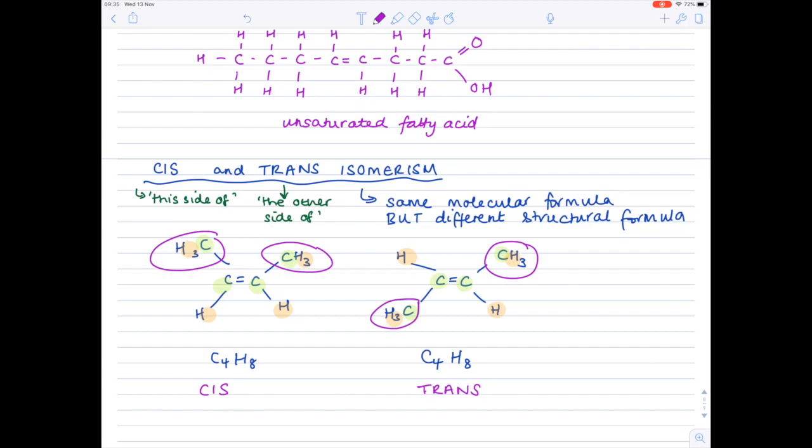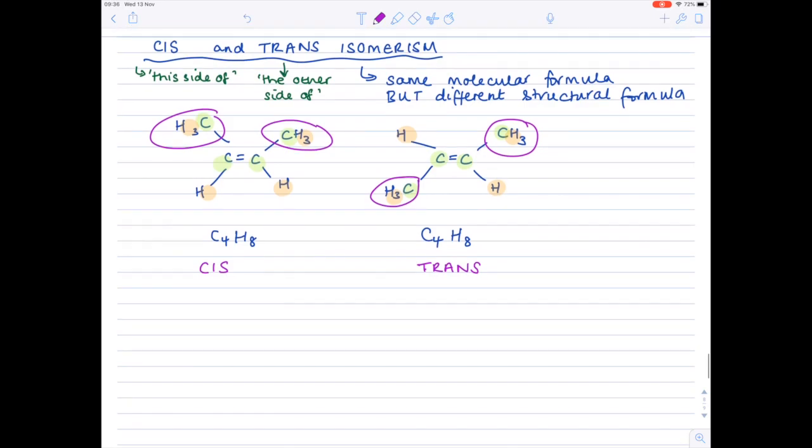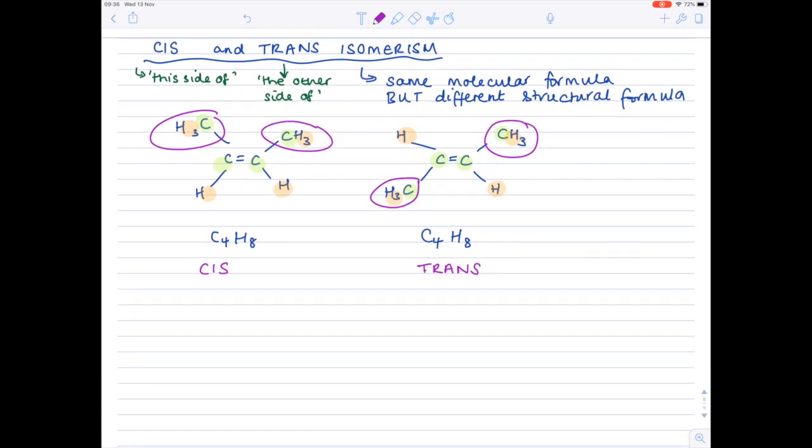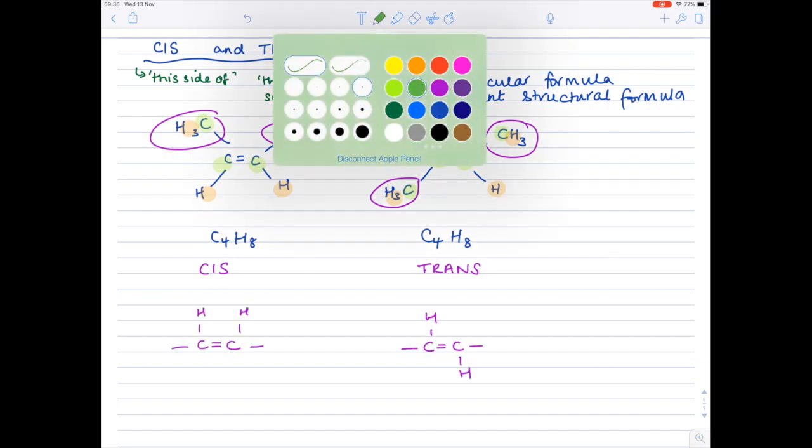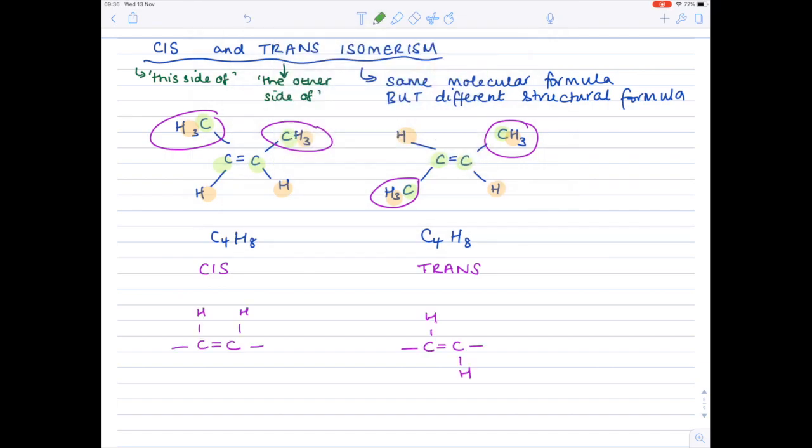So relating that back to biology and fatty acids in particular, let's get ourselves some more room. We're going to be looking at the position of those hydrogen atoms. So here are our two isomers. According to our definition of cis, it means the functional groups are this side of, so the same side as. So the first one is a cis isomer.